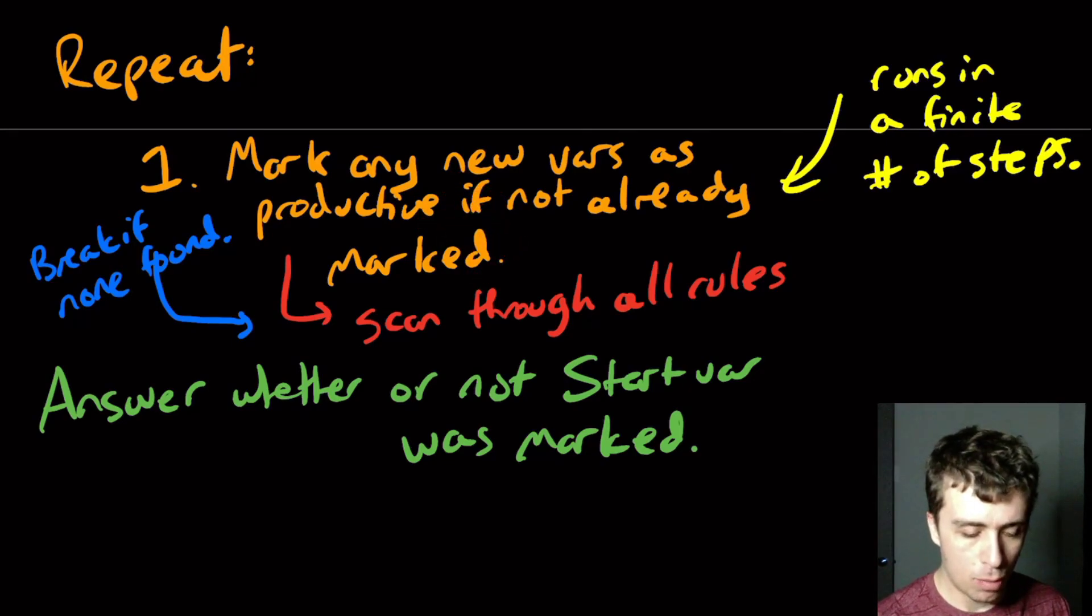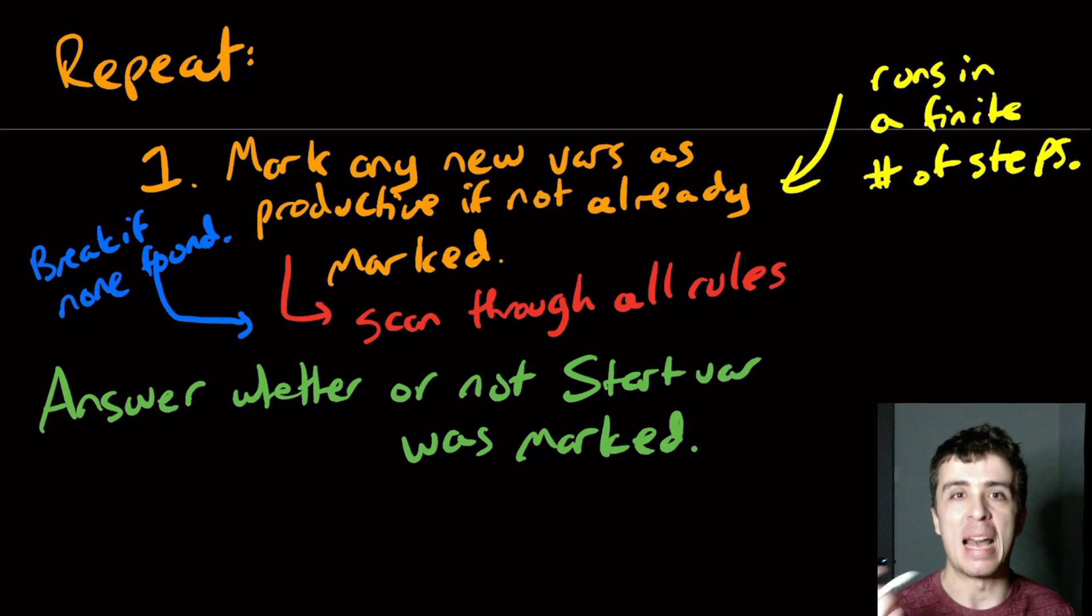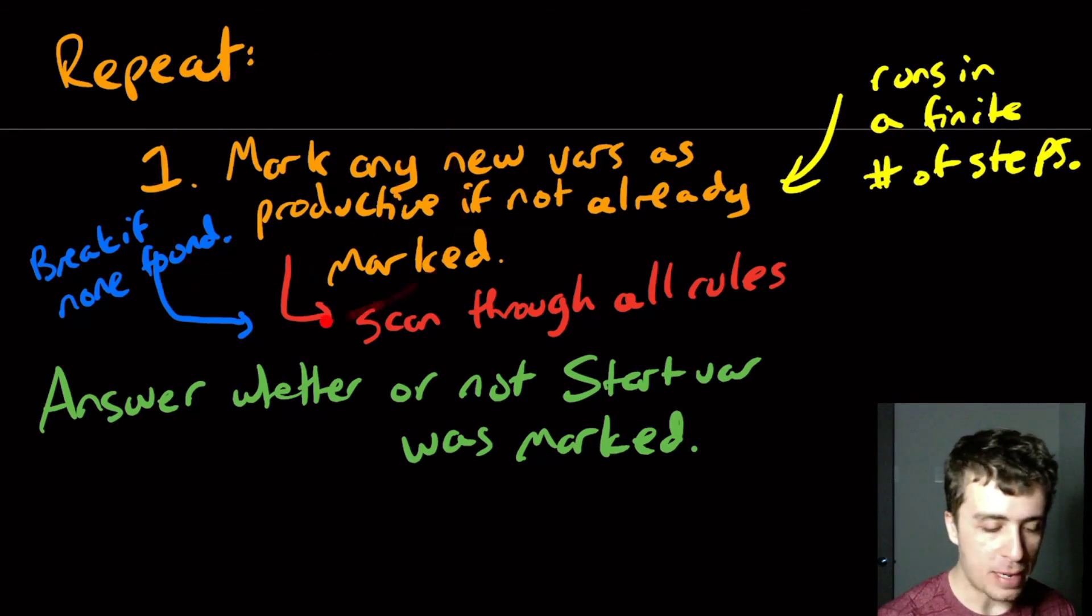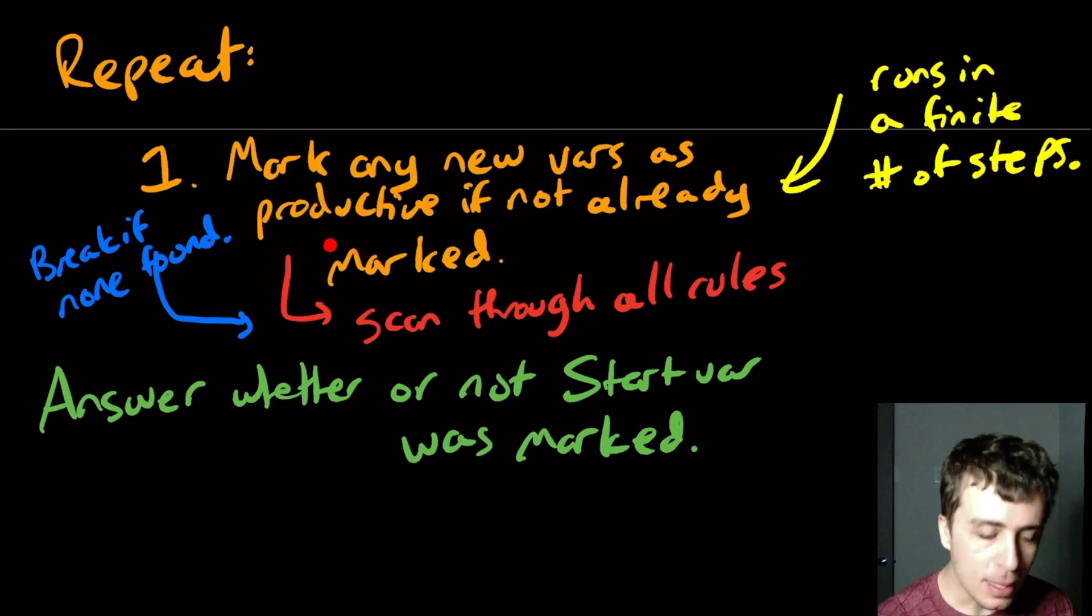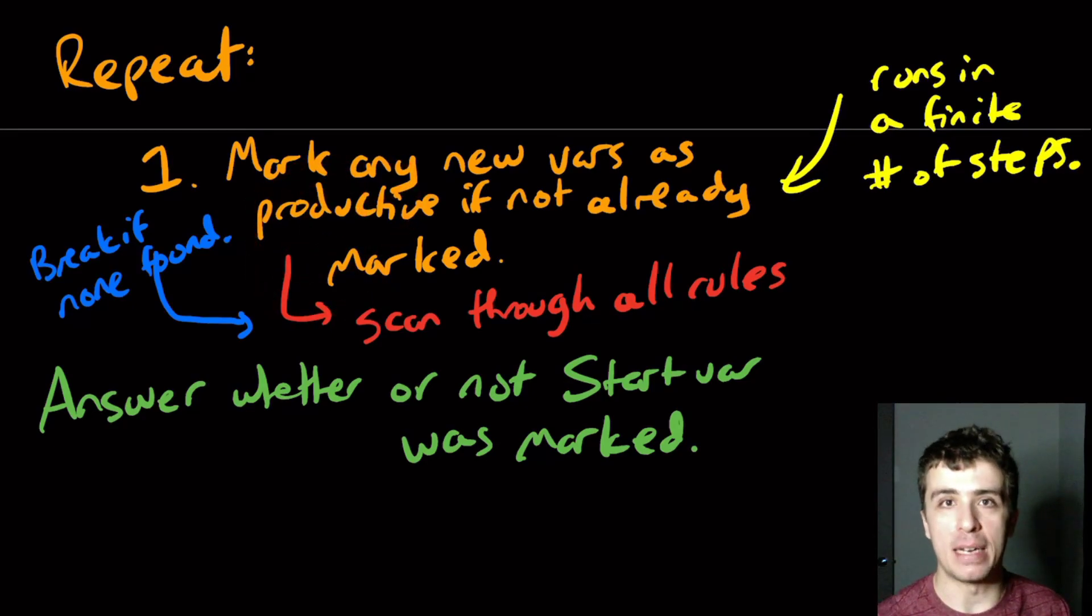So why does this run for a finite amount of time? Well, each time through, we're going to get one new variable at least. And so since there are a finite number of variables in total, then there are only a finite number of loops that we will do throughout this whole thing. Because we get one each time, and we'll break if we don't find any more. So we will have a finite number of iterations. And each time through, we have a finite amount of work because we only have a finite number of rules to actually check.